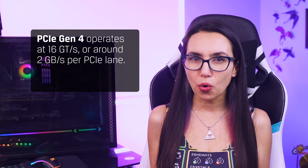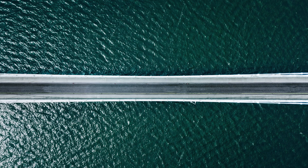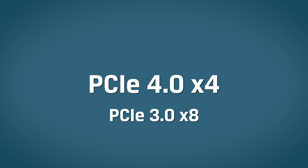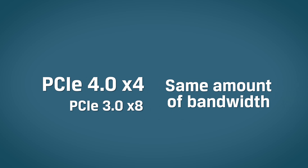PCIe Gen 3 operates at 8 gigatransfers per second, which roughly translates to 1 gigabyte per second per PCIe lane. By comparison, PCIe Gen 4 operates at 16 gigatransfers per second, or around 2 gigabytes per second per PCIe lane. PCIe slots can be configured with one lane or multiples of 4 lanes, such as X1, X4, X8, X16, X32. And since each new generation doubles the bandwidth of the previous one, a PCIe 3.0 X8 interface can be replaced by a PCIe 4.0 X4 interface that provides the same amount of bandwidth.